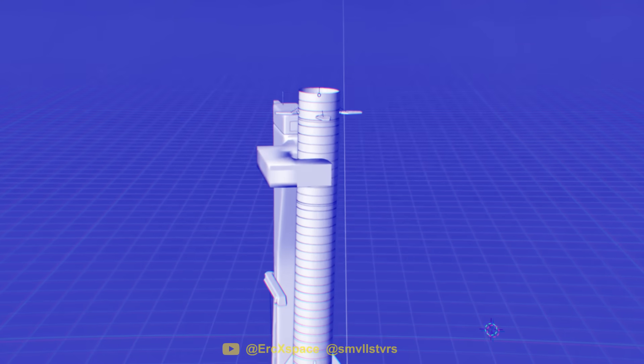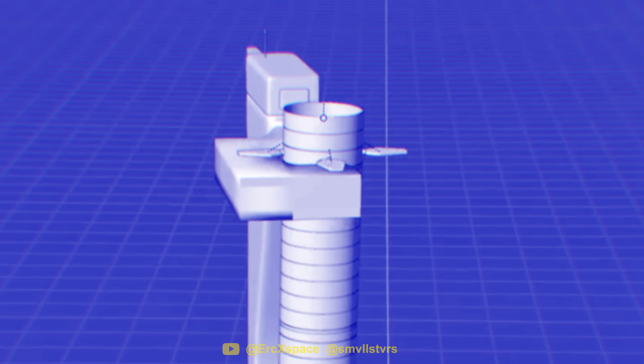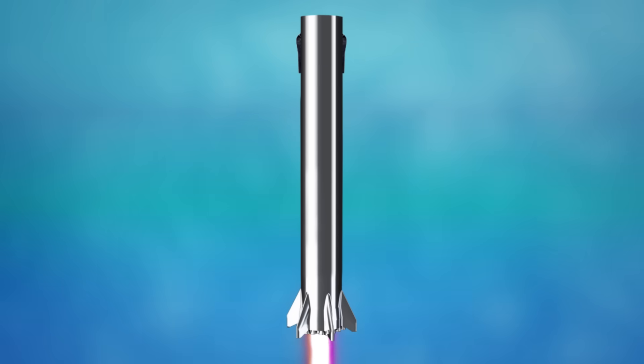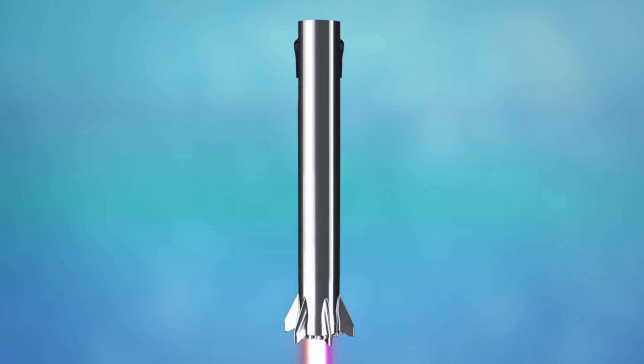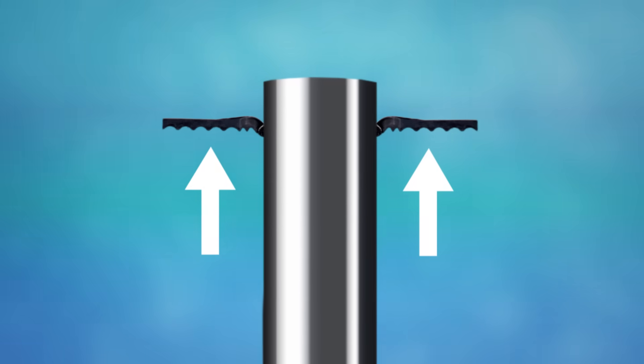One of the key points about this idea is that the catcher will hook on to the grid fins, which will need to take the load of the entire booster. At first, this seems like an incredible amount of force to exert on the grid fins. But, since they are designed to handle a large amount of drag upon reentry, they are already extremely strong in this direction.